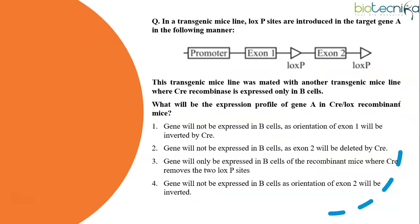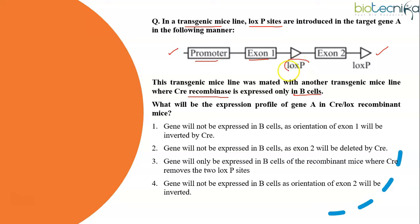Now let's look at the type of questions asked in Part C of the CSIR NET Life Science exam. Here is a figure-based question. In a transgenic mice line, LOX-P sites are introduced in target gene A in the following manner: a promoter is shown, then exon 1, then a LOX-P site, then exon 2, then another LOX-P site — so exon 2 is located between these two LOX-P sites.